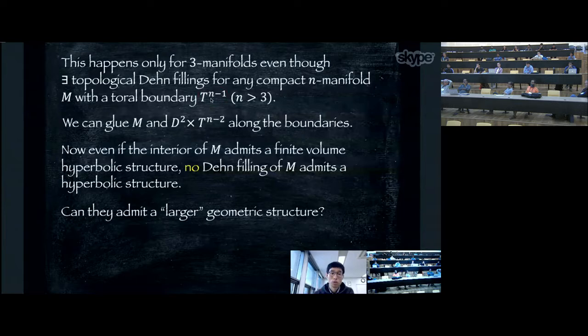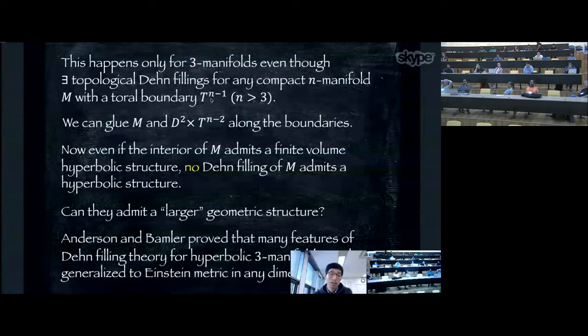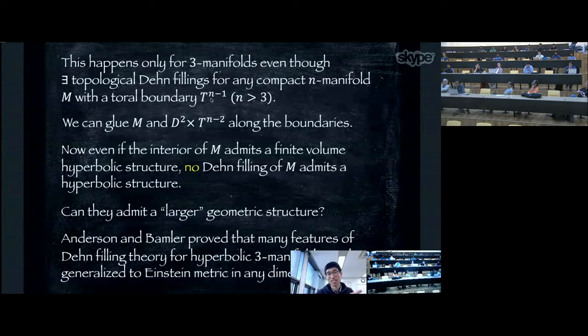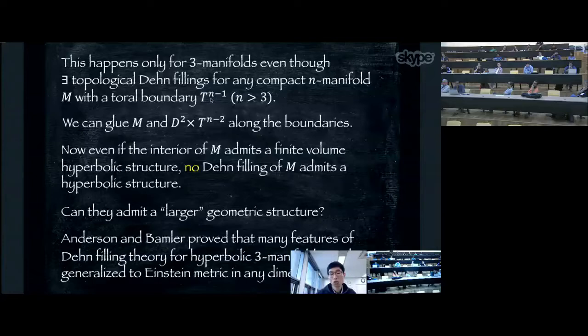The motivation is: if hyperbolic structure is impossible, can these manifolds admit a larger geometric structure? Another motivation is that Anderson and Bamler proved that many features of Dehn filling theory for hyperbolic three-manifolds can be generalized to Einstein metrics in any dimension. Starting with a compact n-manifold whose interior admits a finite volume hyperbolic structure, even though the Dehn filling does not admit hyperbolic structure, almost all Dehn fillings admit an Einstein metric.